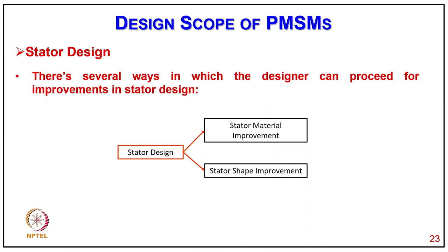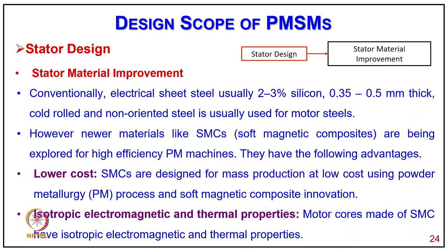Coming to stator design, there are several ways to proceed for improvement: stator material improvement and stator shape improvement. For stator material improvement, conventional electrical steel with 2–3% silicon and 0.35–0.5 mm thickness of cold rolled non-oriented steel is used. However, newer materials like SMC (soft magnetic composites) are explored for high-efficiency permanent magnet machines, offering advantages like lower cost through mass production using powder metallurgy, and isotropic electromagnetic and thermal properties.